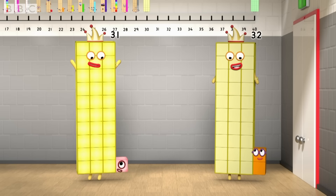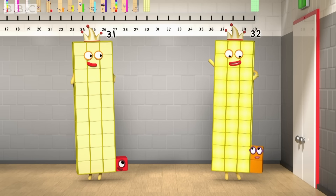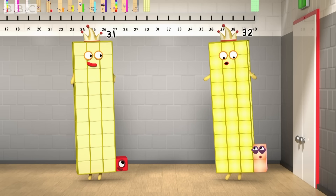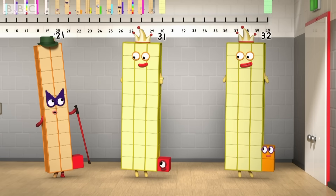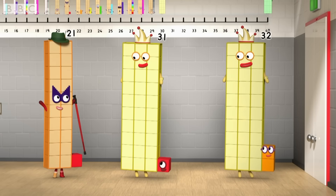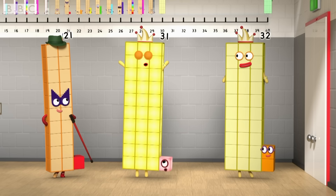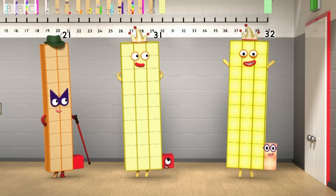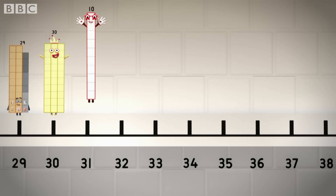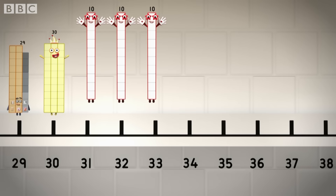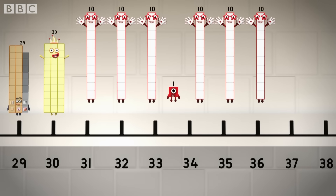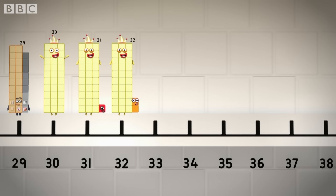How many tens and how many ones can you count to? Three tens and one. Three tens and two. That's how you find out what you amount to. Thirty-one, thirty-two. Then you get to figure it out. That's what this is all about.